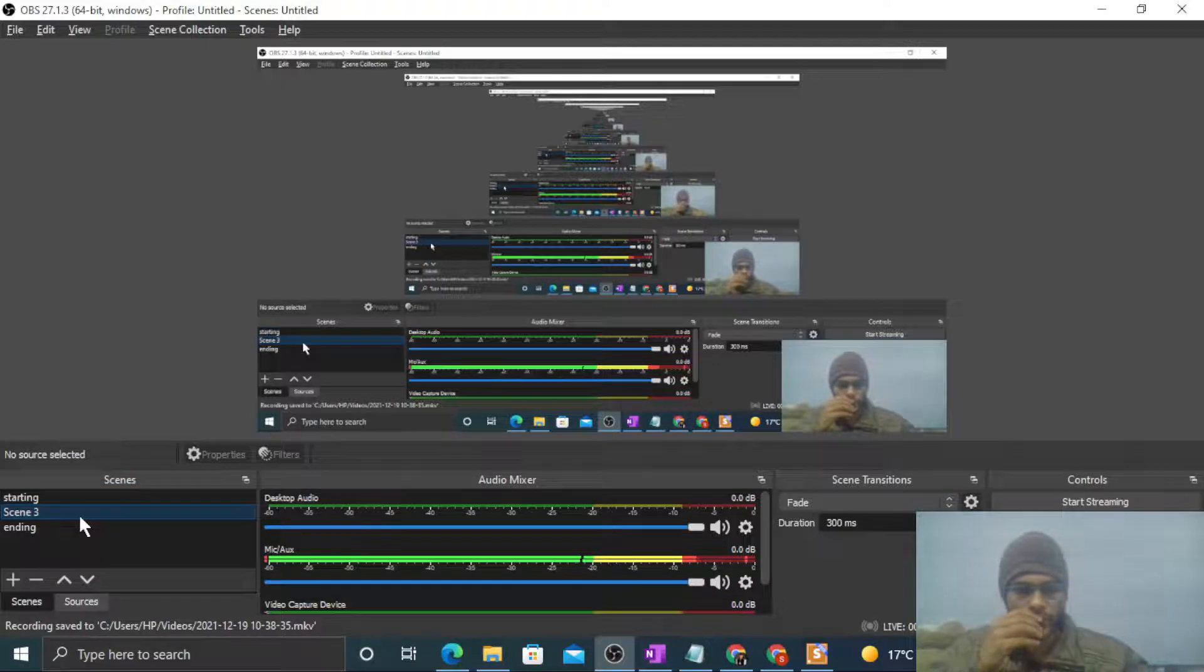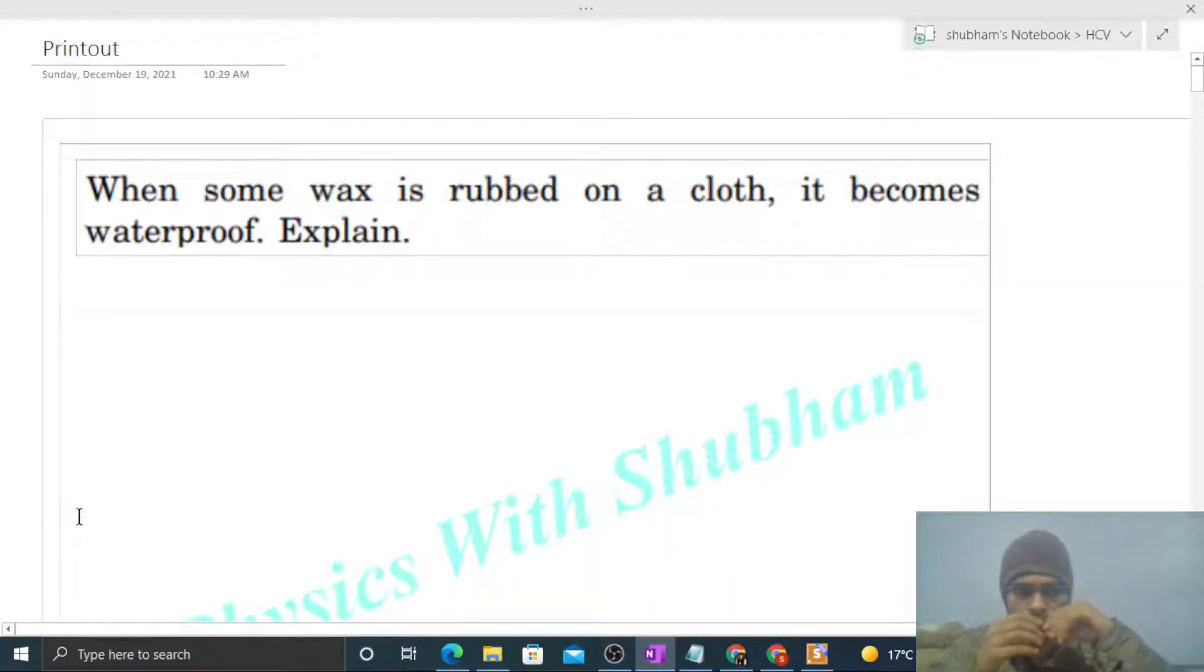Okay, hi everyone. So today let's discuss one interesting problem. It says when some wax is rubbed on a cloth, it becomes waterproof. Explain. So let's say we have a liquid and we have a surface. Will the liquid wet this surface or not? This depends on forces.